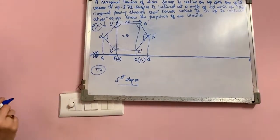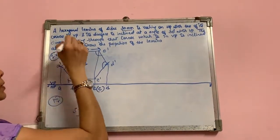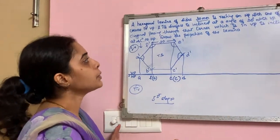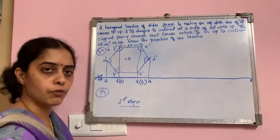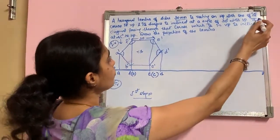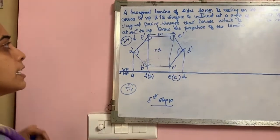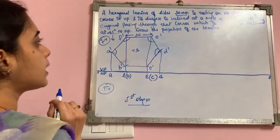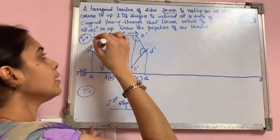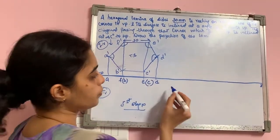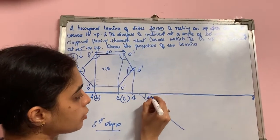After this, we have been given inclination both with respect to VP and HP, so it is a direct question. The surface which is parallel to the XY line is inclined at an angle of 30° with VP. The diagonal passing through the corner which is in VP is inclined at 45° to HP. This is a diagonal problem related to HP — we will come to that later. Let us complete the inclination with respect to VP first, because we are starting with the front view and then coming to the top view. The surface will now be inclined at 30° to VP. Show the 30° line.